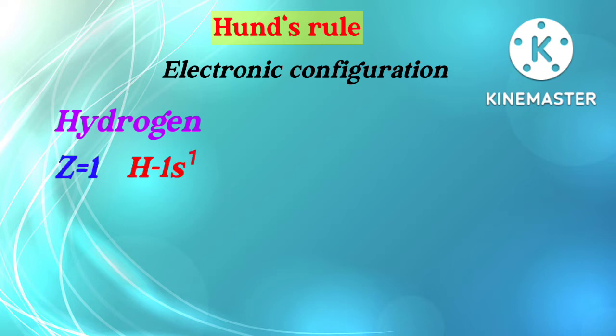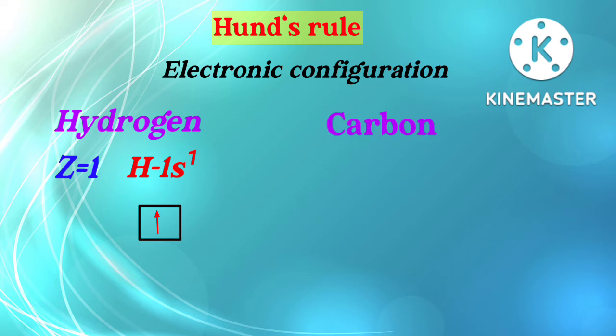First, hydrogen. The atomic number of hydrogen is 1. Hydrogen has 1 electron and 1 proton. As we know, the electron will go into the 1s orbital first. Two electrons can go into the 1s orbital, but hydrogen has only 1 electron, so that electron will go into the 1s orbital. Place it in the upward direction.